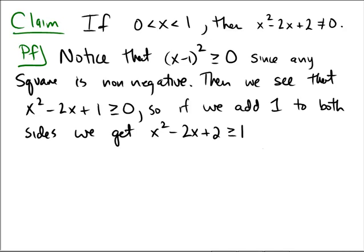Now, if you're bigger than or equal to 1, you're certainly not equal to 0. And notice that that is exactly what the conclusion says, that x² - 2x + 2 ≠ 0.